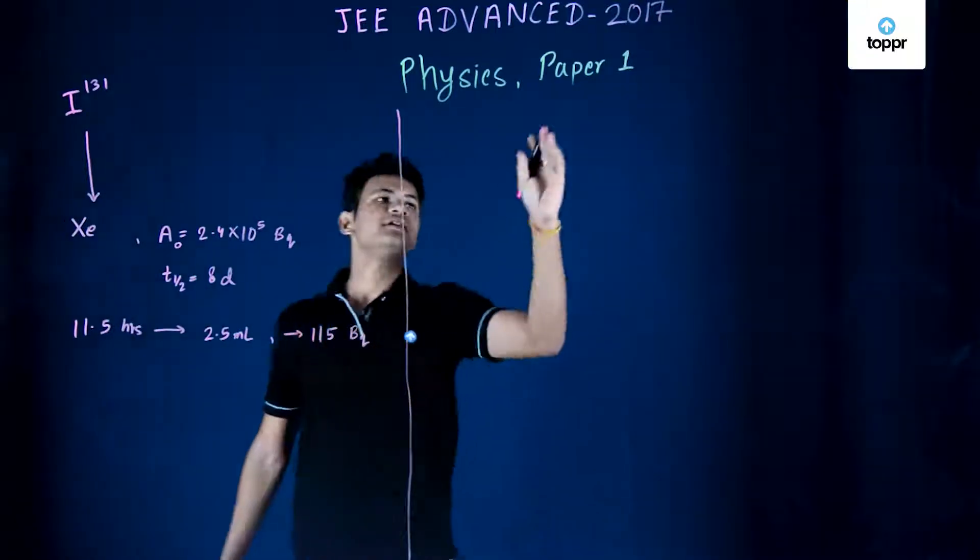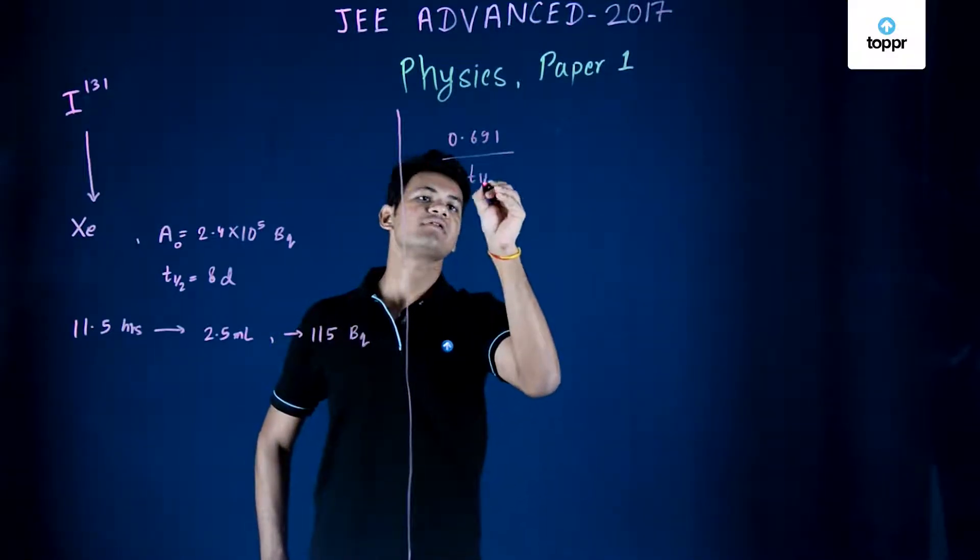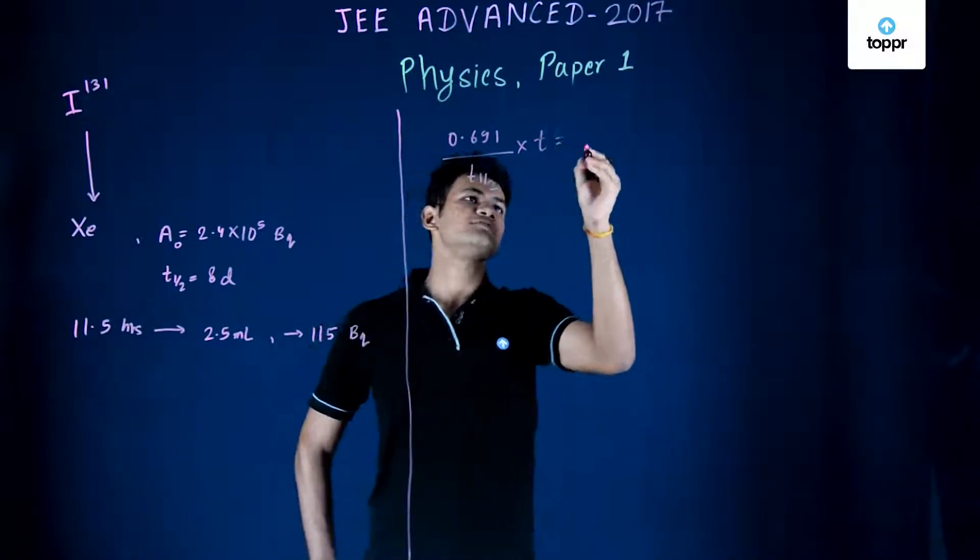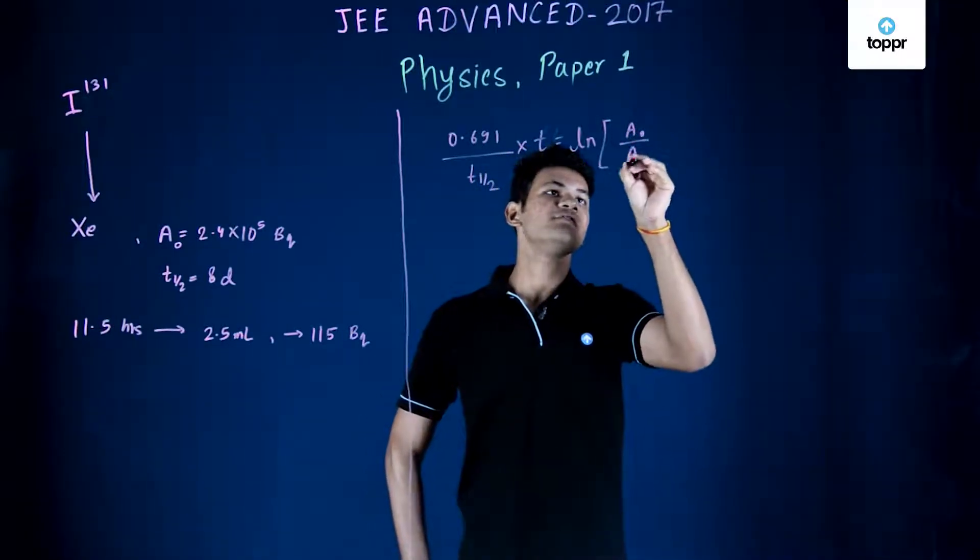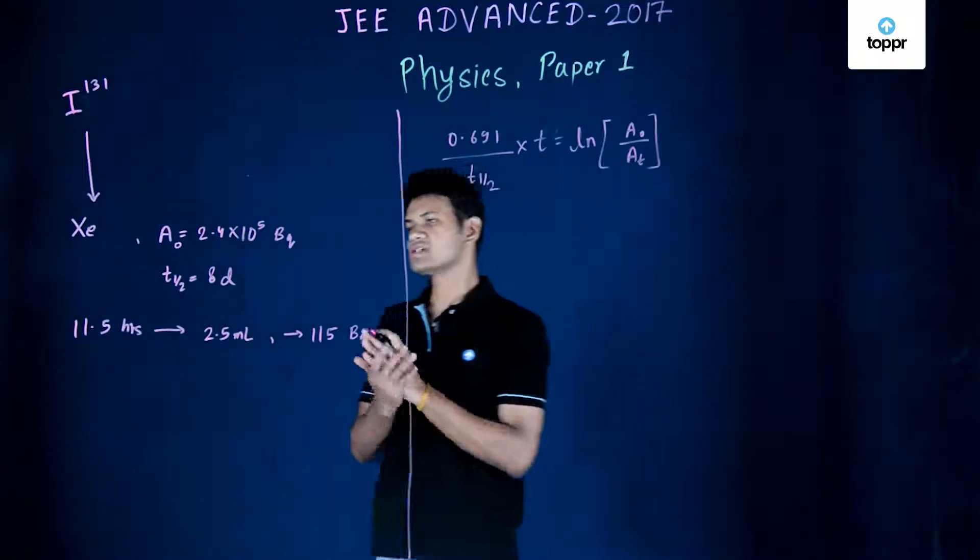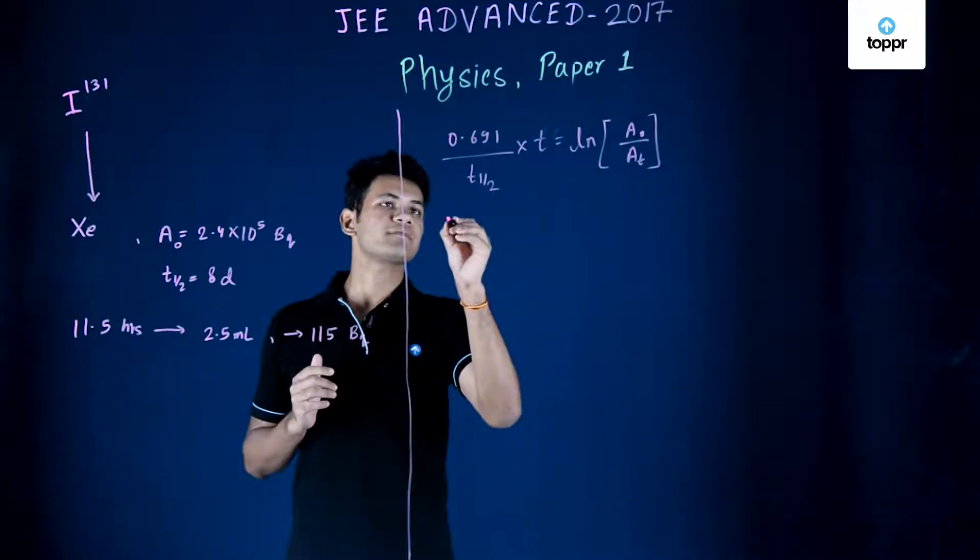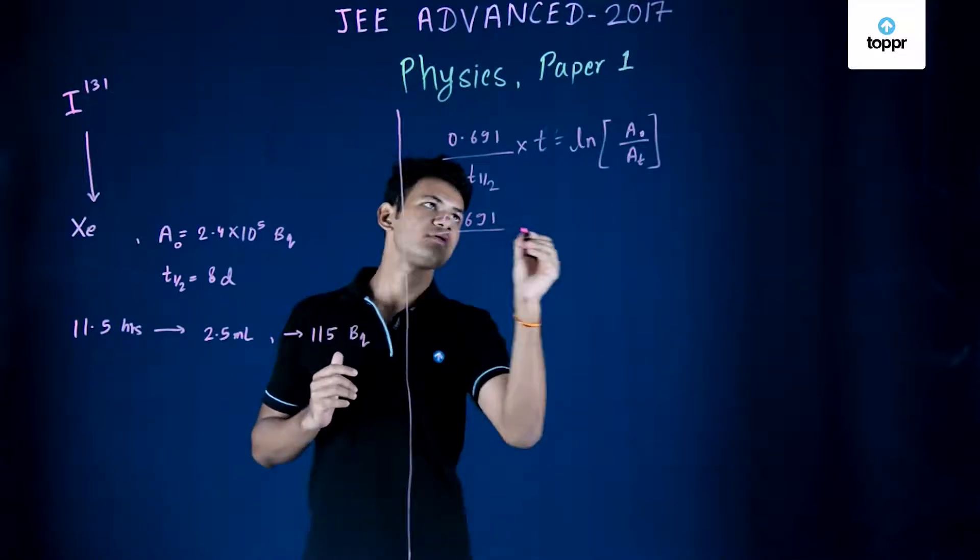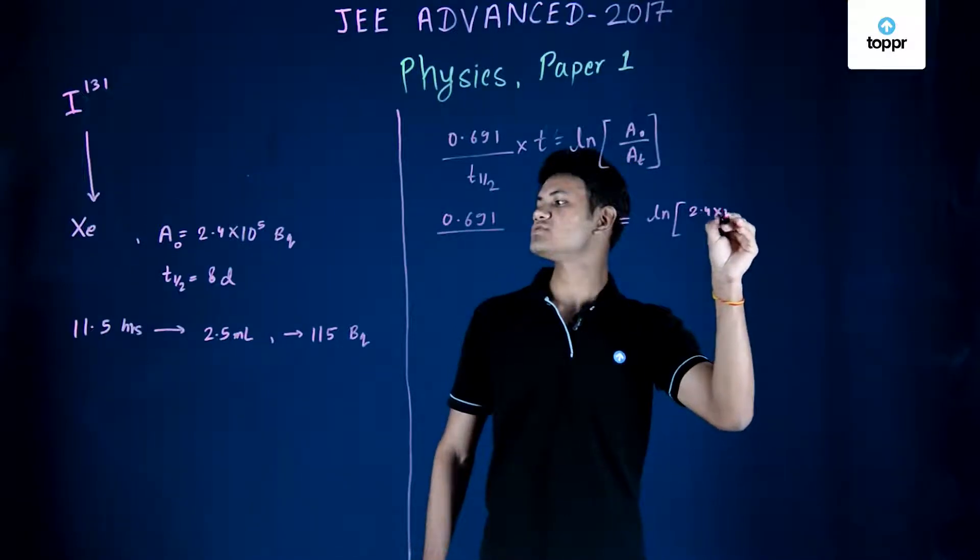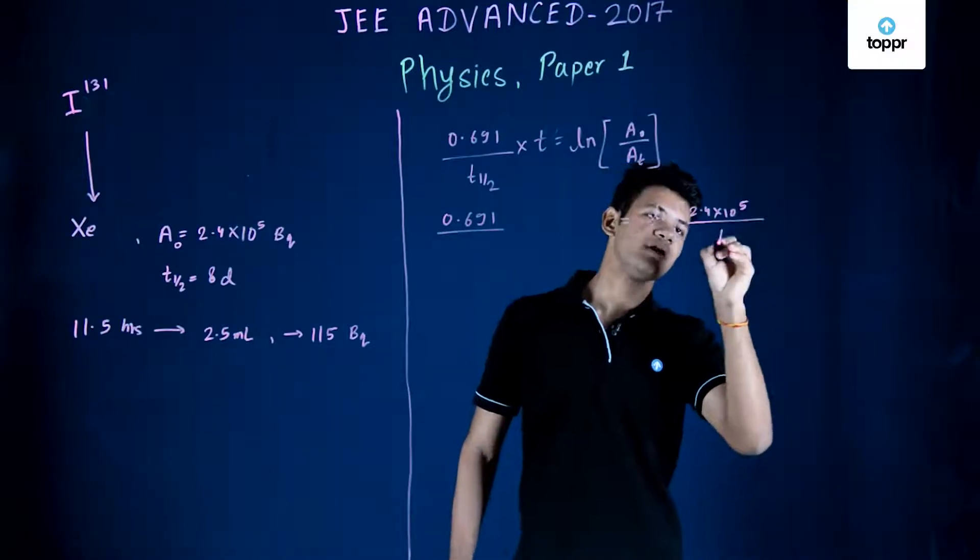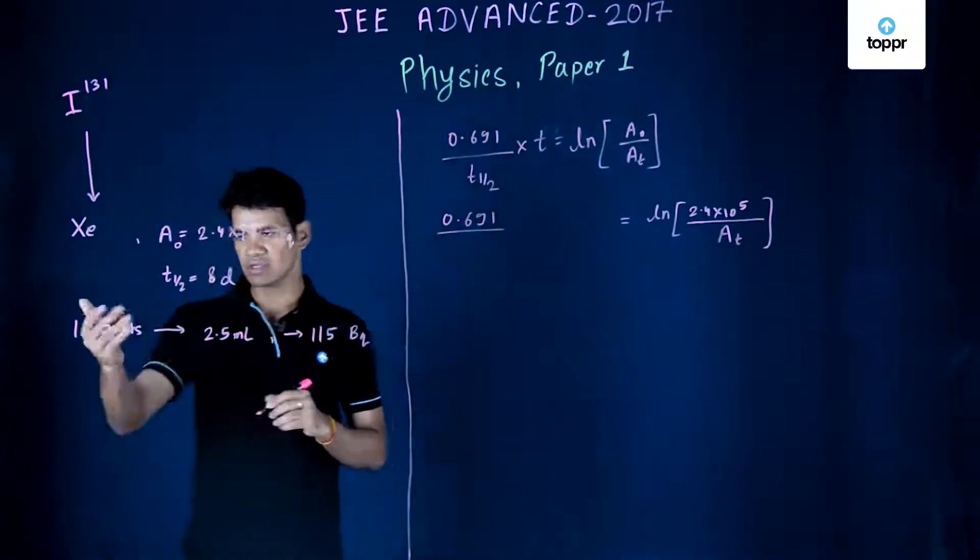So now using the decay formula we can say that 0.691 upon t_half into time equals ln of A0 upon activity at any time t. We have A0 which is the original activity which was undiluted. Substituting these values we have A0 being 2.4 × 10^5 and activity at any time t. Now basically we are interested in finding activity at 11.5 hours.